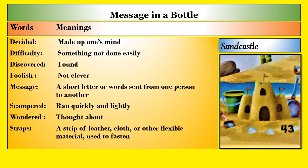Now, word meanings. The first word is decided — it means made up one's mind. The second word is difficulty — something not done easily. Discovered means found. Foolish means not clever. Message means a short letter or words sent from one person to another. Scampered means ran quickly and lightly. Wondered means thought about. Straps — a strip of leather, cloth or other flexible material used to fasten.